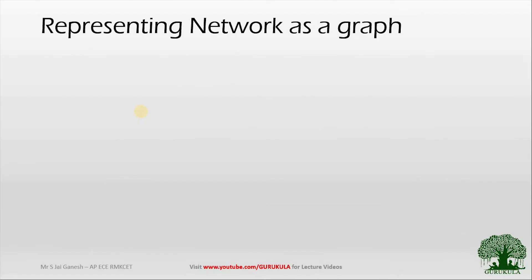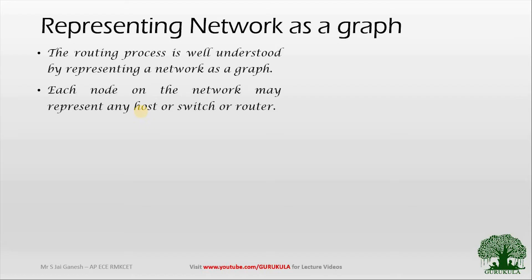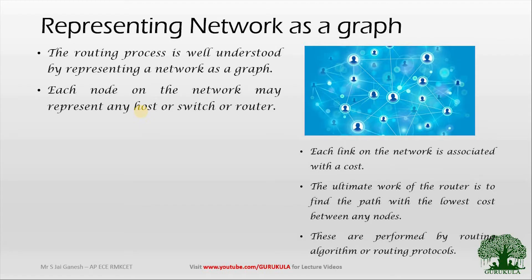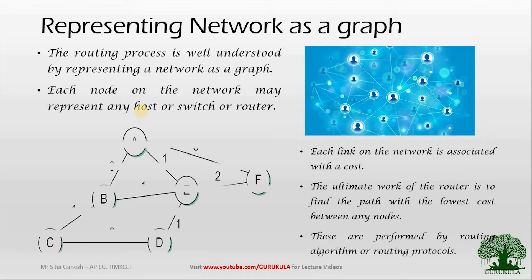Before jumping into routing protocols we need to change how we look at the network. The routing process can be well understood if you represent the network as a graph. Instead of looking at routers, switches, and servers separately, you can put everything as a node. Each node represents any host, switch, or device connected on the network. Each node is connected to others by a link, and each link has a metric as depicted in the picture.